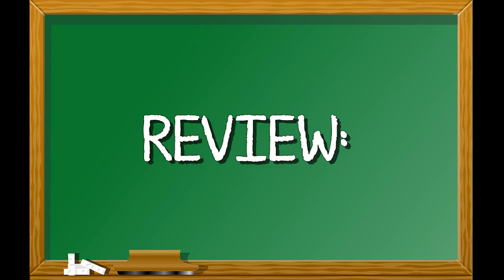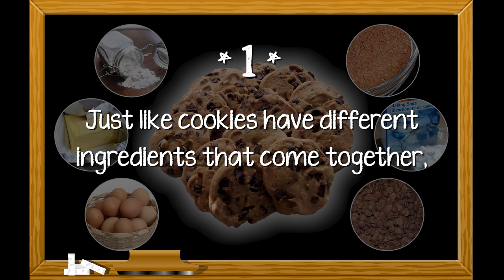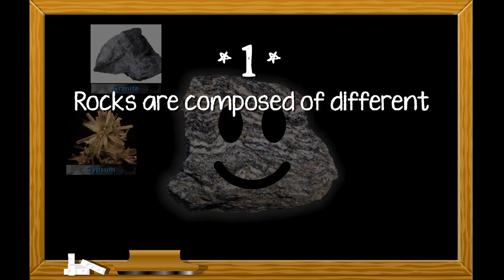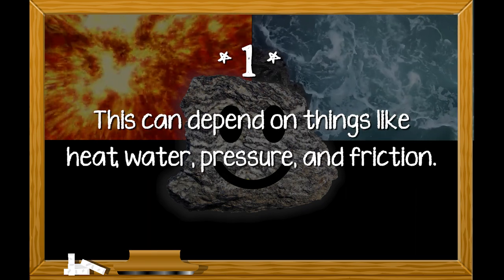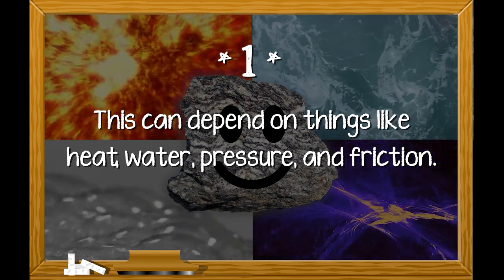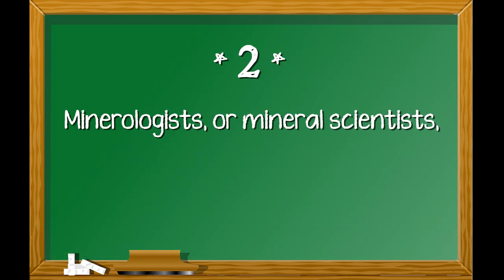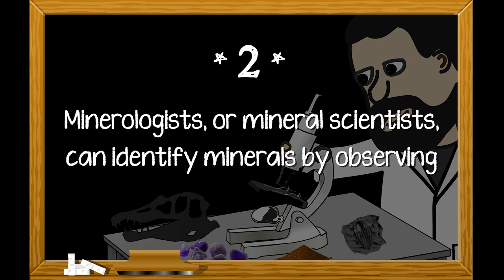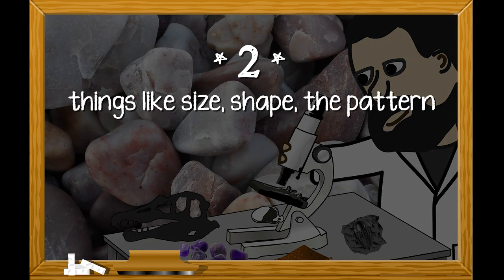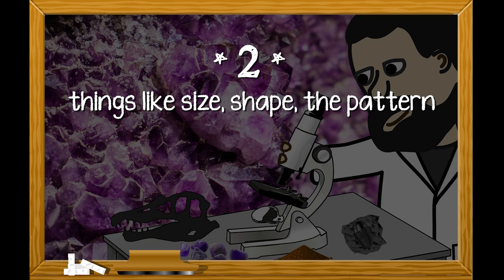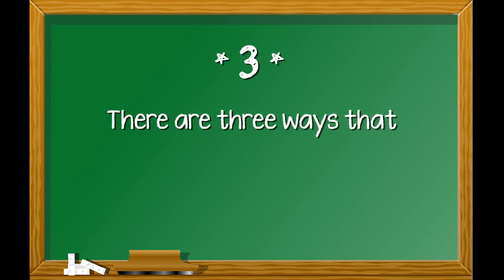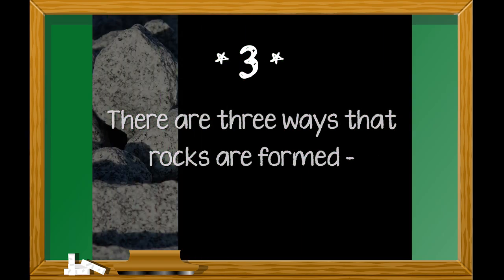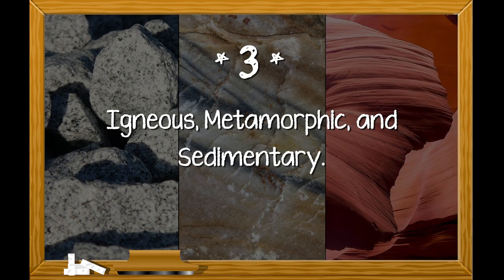Let's review what we have just learned. First, just like cookies have different ingredients that come together, rocks are composed of different types of minerals. This can depend on things like heat, water, pressure, and friction. Second, mineralogists can identify minerals by observing things like size, shape, the pattern it breaks in when hammered, and hardness. Third, there are three ways that rocks are formed: igneous, metamorphic, and sedimentary.